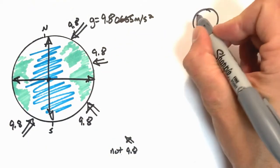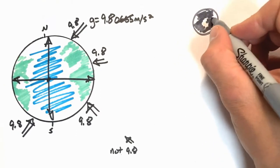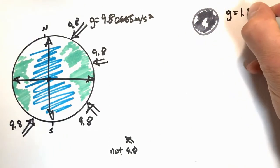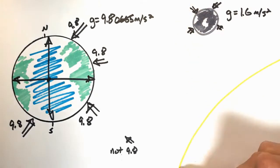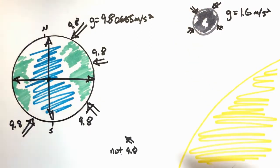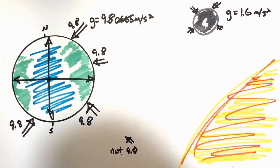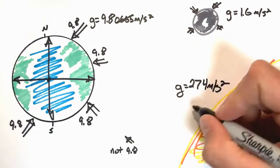On the Moon, the acceleration due to gravity is 1.6 meters per second squared. And on the Sun, it's 274 — but don't worry about that. It's too hot to get there anyway.